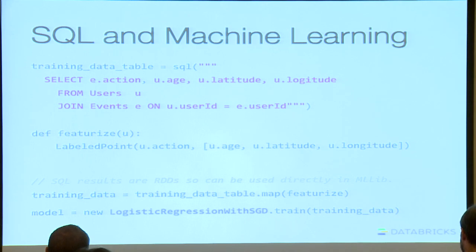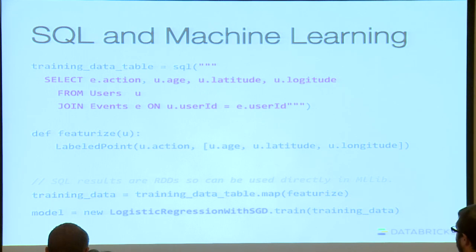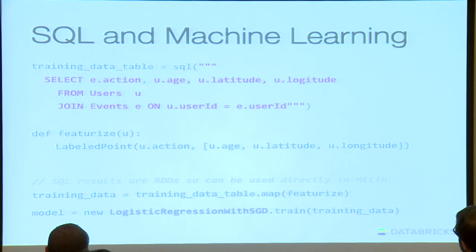You write a function called featurize that takes these rows and turns them into feature vectors — pulling out the action as the label and creating an array of features for each user. Once done, the data is in the right form to dump into MLlib. You take an off-the-shelf parallelized machine learning algorithm — in this case logistic regression — dump in the training data, and get a model out. So you've mixed an off-the-shelf library, custom processing, and extraction of data from an existing data source into a complete analytics pipeline.